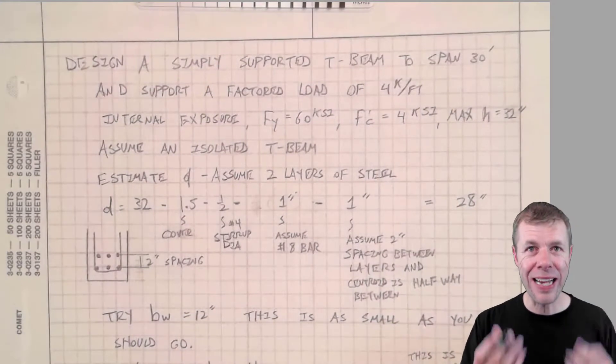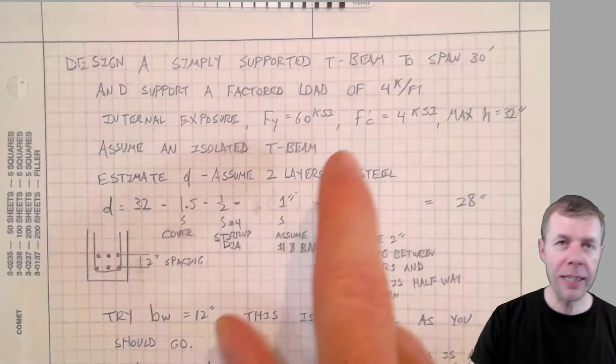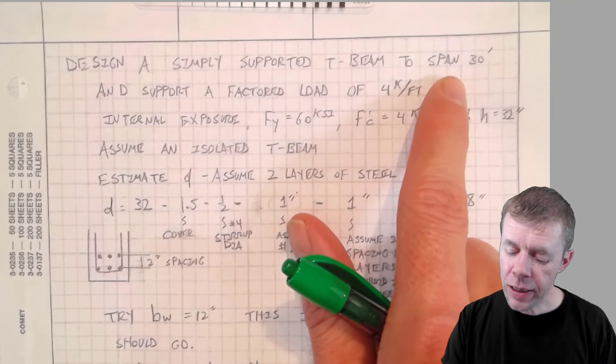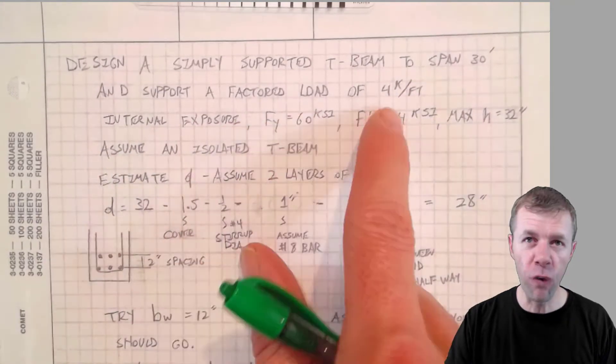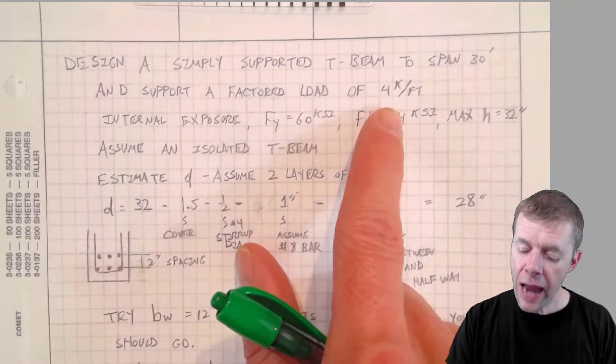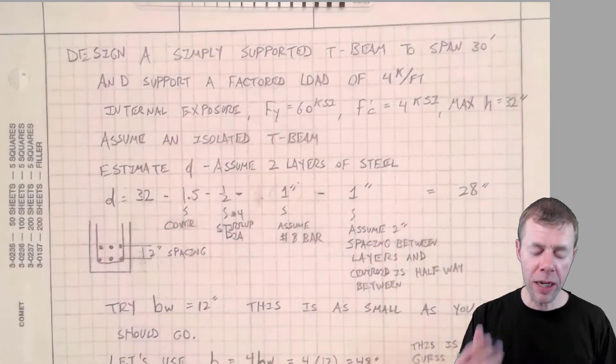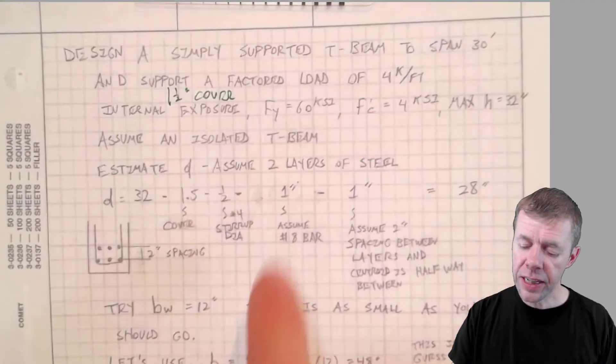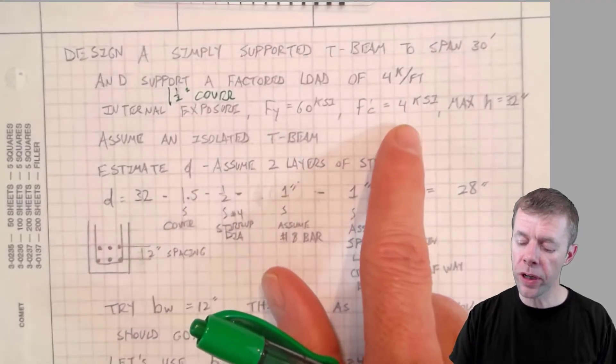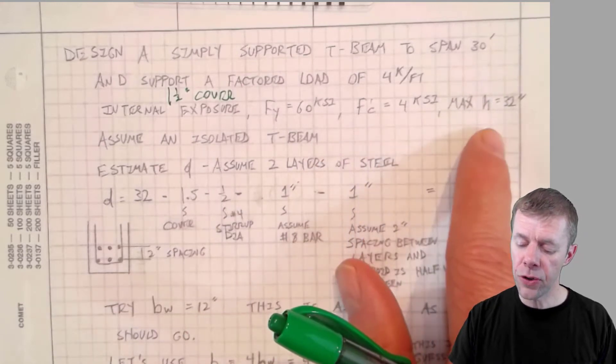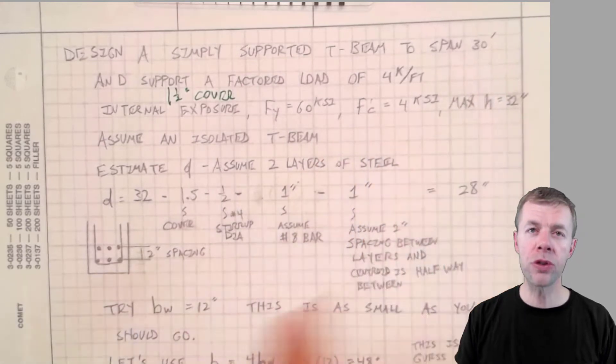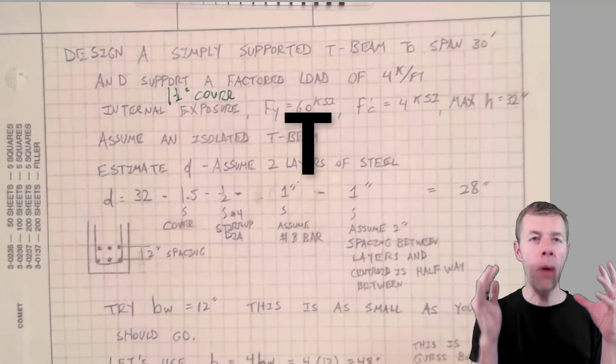Now we get to design a simply supported T-Beam. It's gonna span 30 feet, support a factored load of 4 kip per foot, and it's got internal exposure. 60 KSI, F'C is 4 KSI, the height is 32 inches, and we're gonna assume it's an isolated T-Beam.